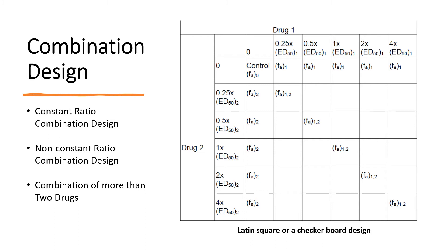As indicated by the multiple drug effect equation, each term of the equation is a dividing ratio. Therefore, the unit for each term cancels out and becomes a dimensionless quantity. Therefore, two drugs with different units can be combined and the results analyzed as usual.